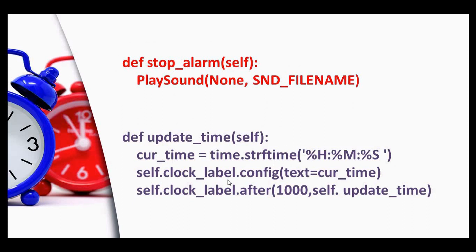We are getting the current time using strftime and then we are updating this text of the clock label. This will be updated using this after function. We will be using this after function to run after a certain time. This thousand represents thousand milliseconds - that is, after every one second this function will be called.